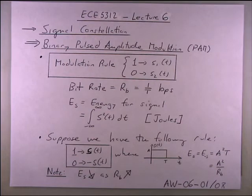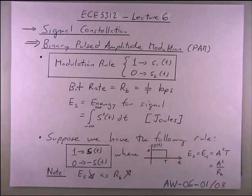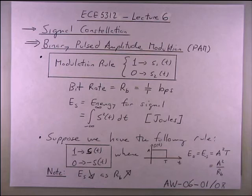In PAM, if the receiver intercepts a signal with a certain amplitude, it knows the corresponding binary pattern. With binary PAM, we only have two amplitudes to choose from. The modulation rule is: a '1' is mapped to waveform s1(t), and a '0' is mapped to waveform s2(t). Since it's binary, the symbol duration equals the bit duration — one bit is represented per T seconds.